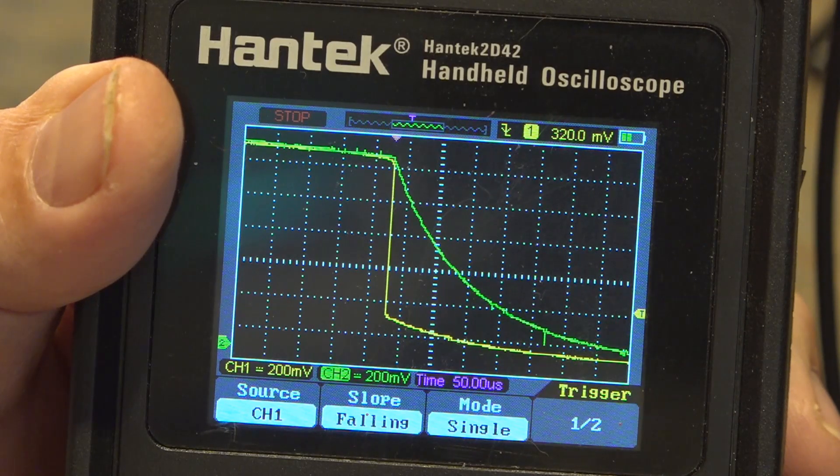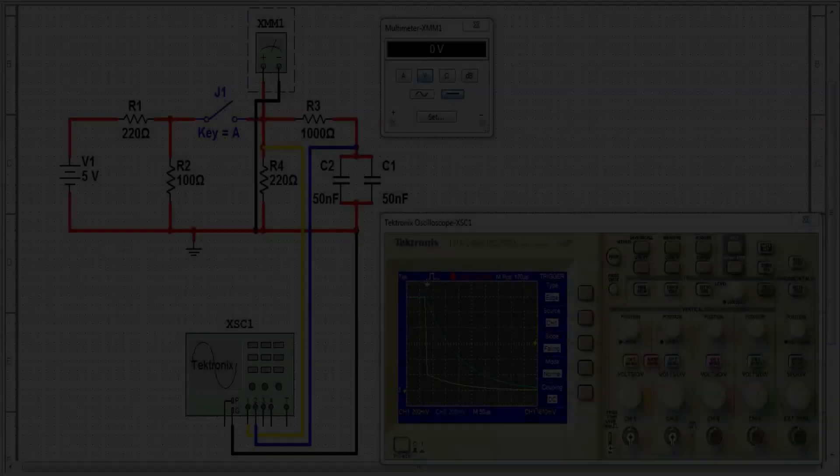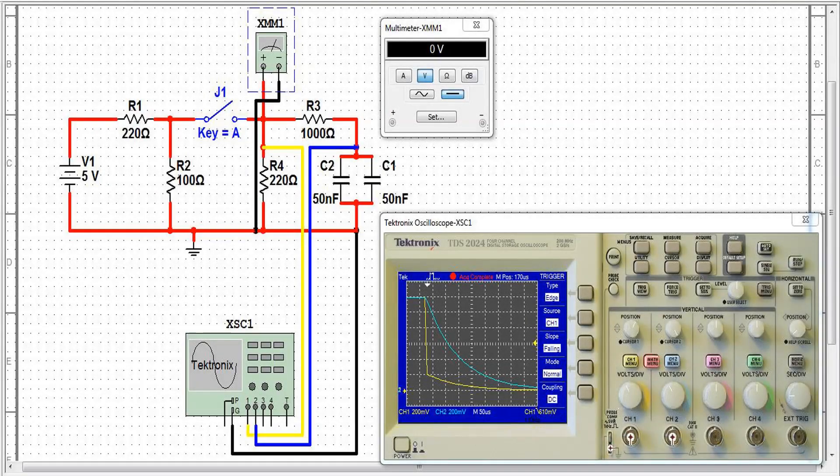Here's my Multisim of that. You can see the curves I got on Multisim are very close to the curves I got in real life on the Hantek. The voltage at this point is going to be zero volts because I've opened Key A, and I get the discharge rate. Using the cursors and the scope screen, you can identify what your voltages are.